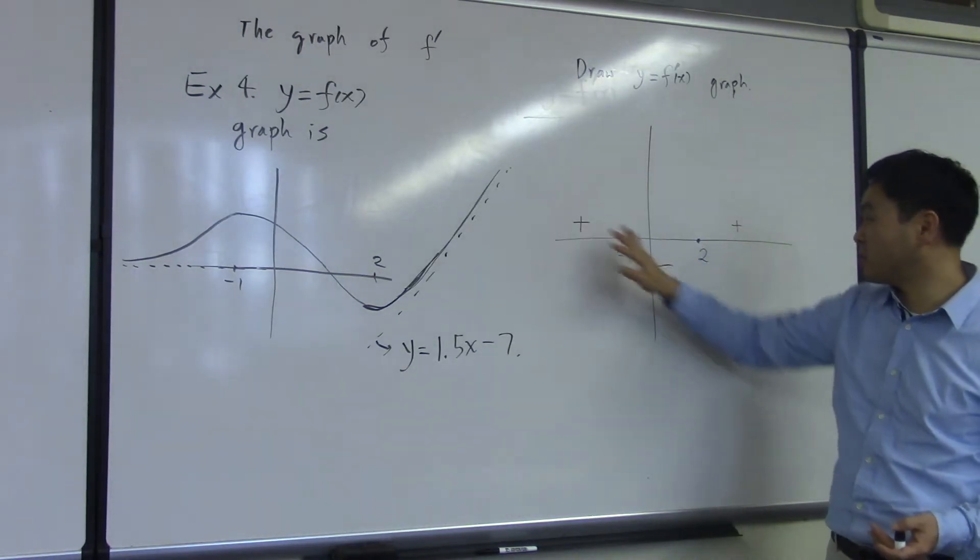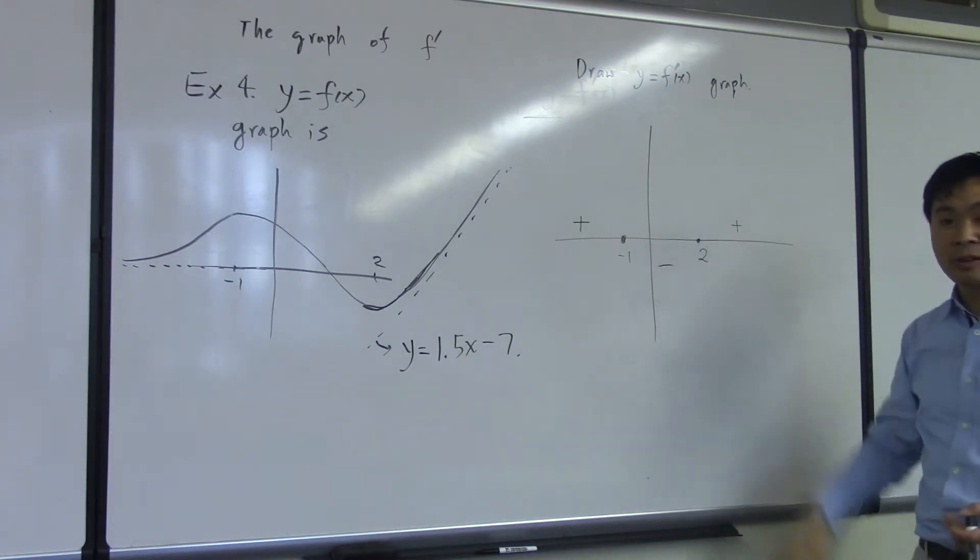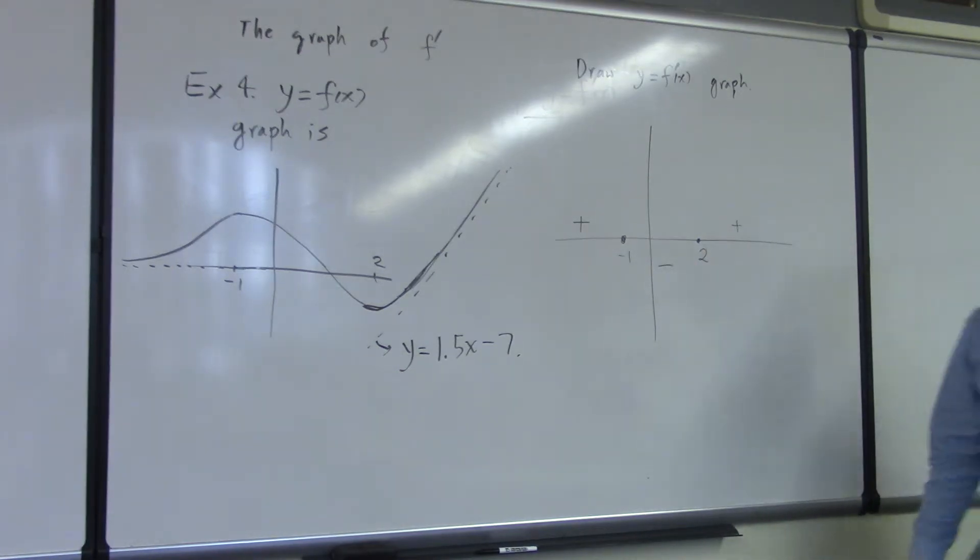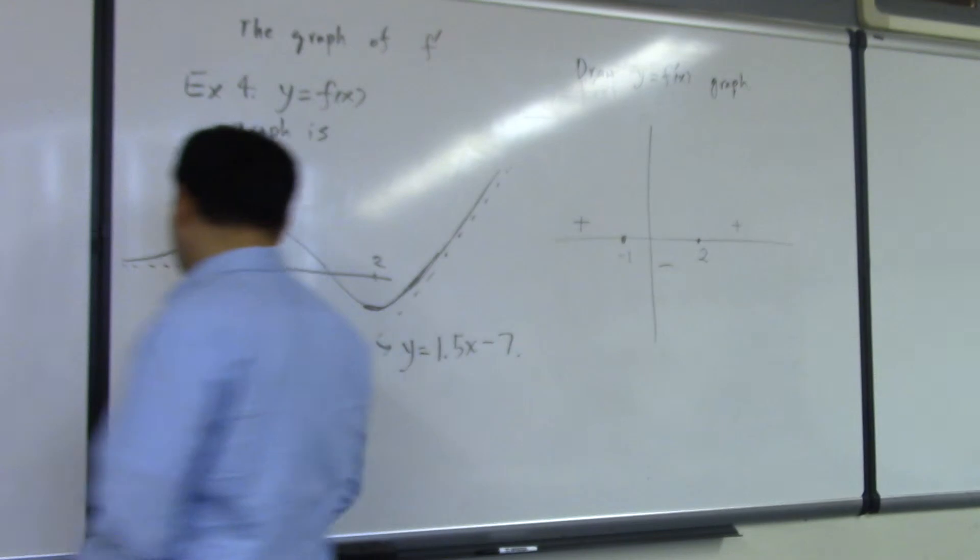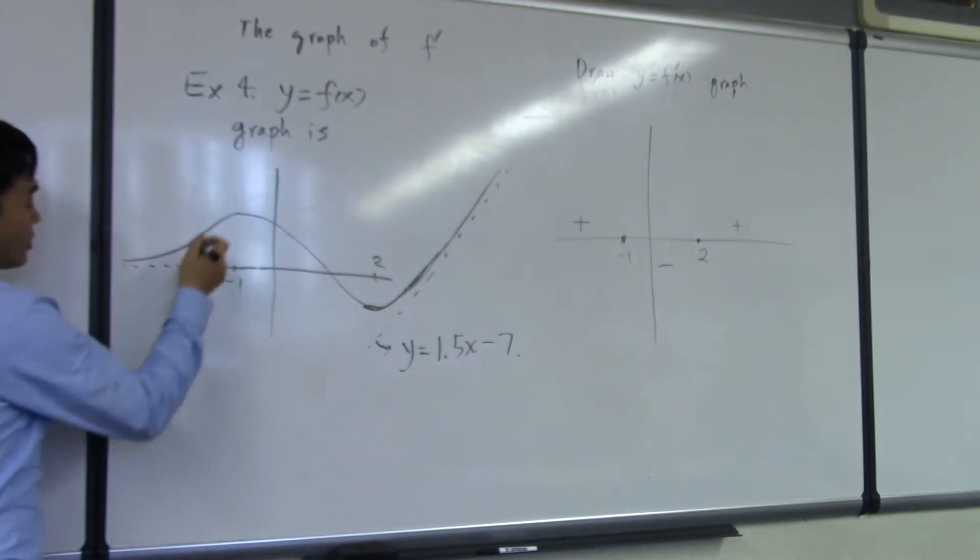Increasing, decreasing, increasing. So the graph should be somewhere here, somewhere here, somewhere there. Now we have to think about what to do with these asymptotes.